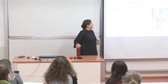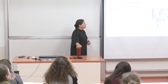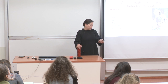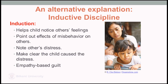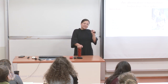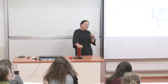An alternative explanation is inductive discipline — a form of positive discipline which helps children notice others' feelings, points out the effects of children's own misbehavior on other people, and notes others' distress, making clear that the child caused the distress. This is also known as empathy-based guilt. So a parent who uses induction — if, for example, their kid knocked down a castle that another child built in the sandbox — might point it out to the child.